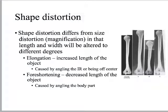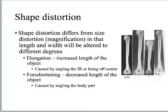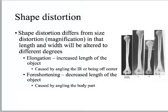The other form of shape distortion is foreshortening, which causes the object to appear shorter than the actual object — that is option B, a decreased length of the object. This is caused by angling the body part. I know this can seem a little confusing, which is why we've brought our flashlights — we're going to look at this in just a minute.